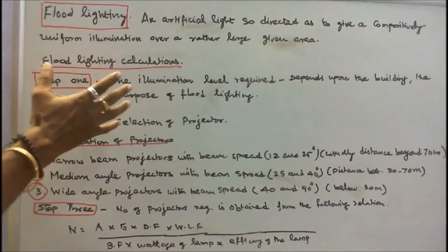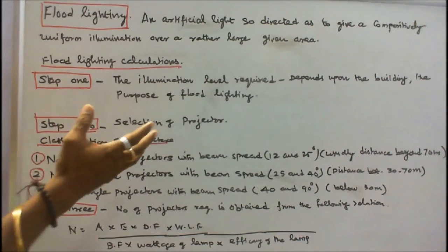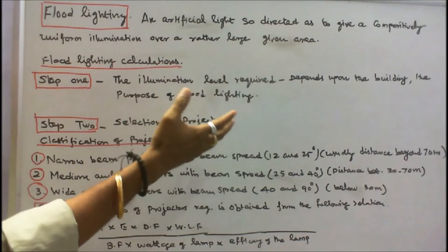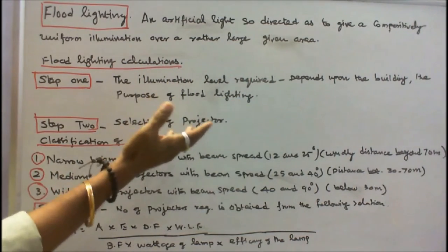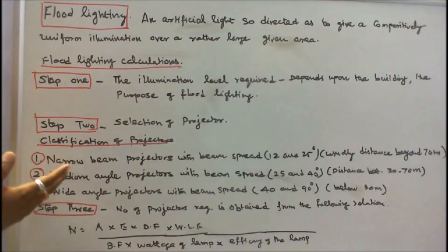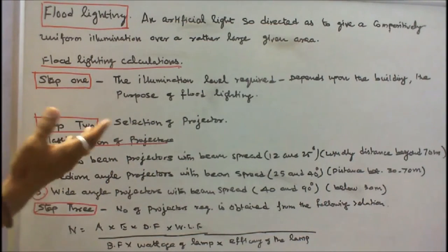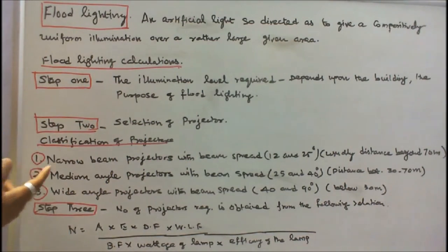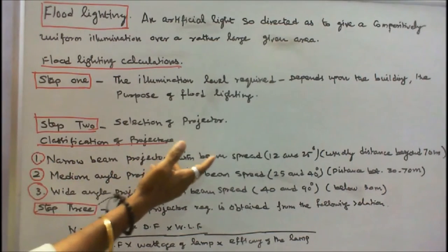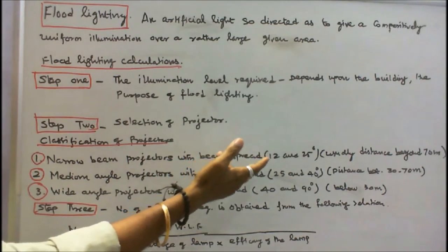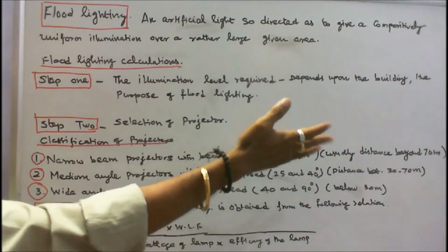Front Lighting Calculation: Step 1 — find the illumination level required, which depends upon the building and the purpose of front lighting. Step 2 — Selection of projectors. The projectors are classified as: (1) Narrow beam projectors, with beam spread angle between 12 and 25 degrees, usually for distances beyond 70 meters.